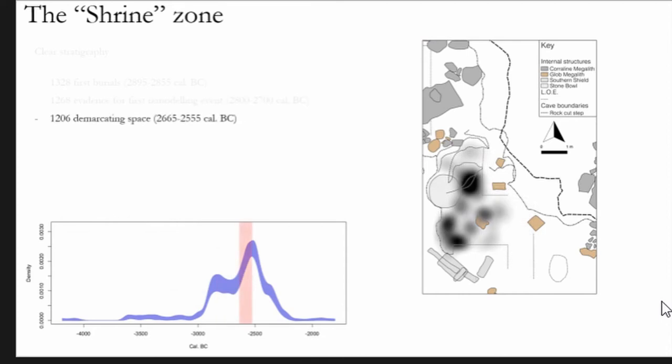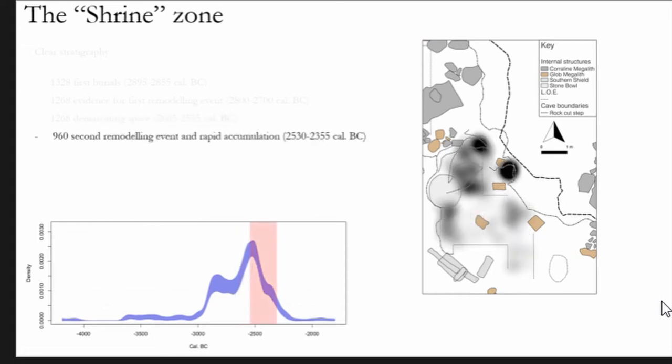Burial activity after that becomes very rapid, so we get rapid deposition of human remains that build up within the area demarcated by this megalithic screen. But this rapid burial activity continues and then we eventually see that burial activity overflows up around these existing structures, which then prompts a second remodeling event whereby they have to rip out these megaliths and reposition them.